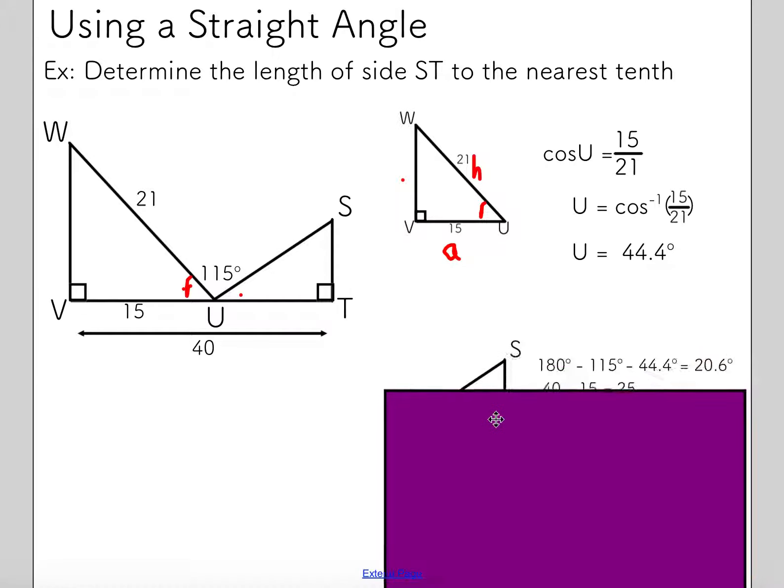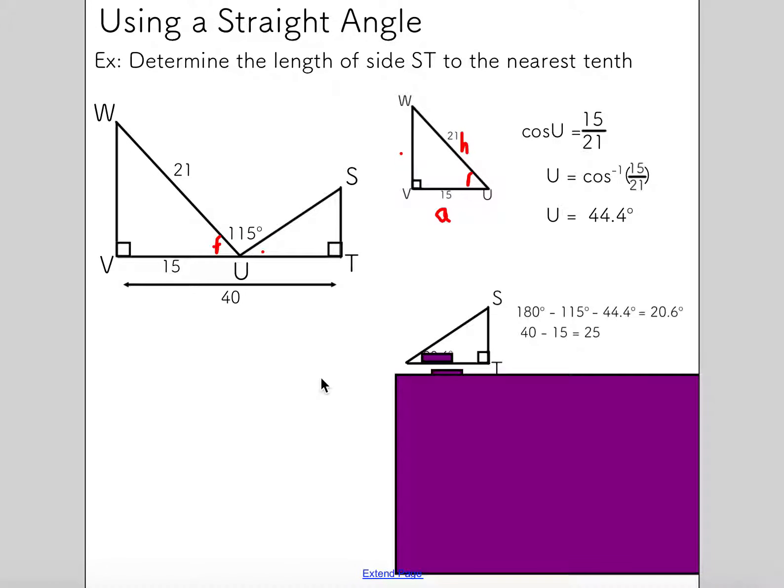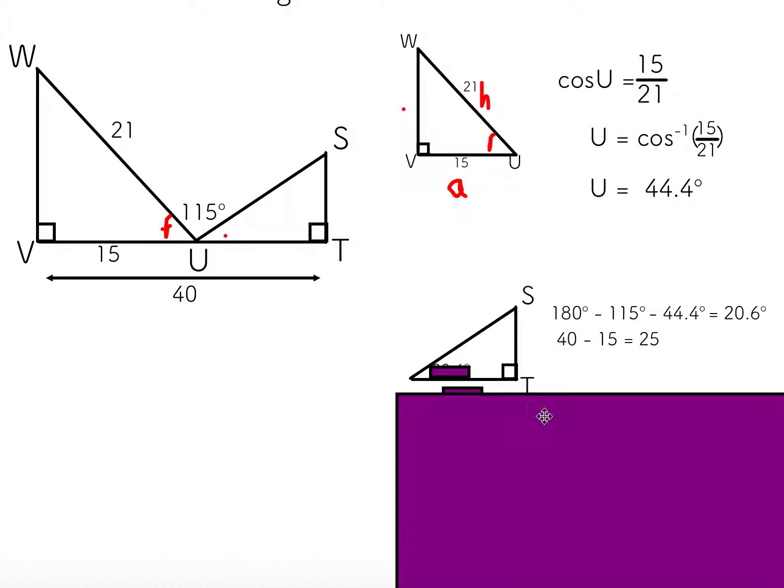That's enough information for me to learn that this angle U in this triangle would be 180. If I take 180 degrees, I subtract out my new angle and my given angle, I should be able to get 20.6 degrees. The other thing I need is I need some sort of understanding of a side length in my triangle. I've taken this whole distance from V to T, and I've subtracted out this distance from V to U. That should leave me with whatever remains as this distance here. I've taken 40, I've subtracted 15, and I've got 25. I'm just going to quickly label that on my triangle.